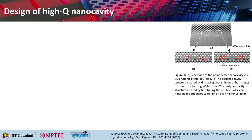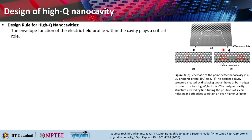Figure (b) shows the design cavity created by displacing two air holes at both edges of the L3 cavity. Here, three holes — a, b, c — on each side are displaced, so six air holes total are displaced near the two edges. The photonic crystal structure has a triangular lattice of air holes with lattice constant a, slab thickness 0.6a, and air hole radius 0.29a.